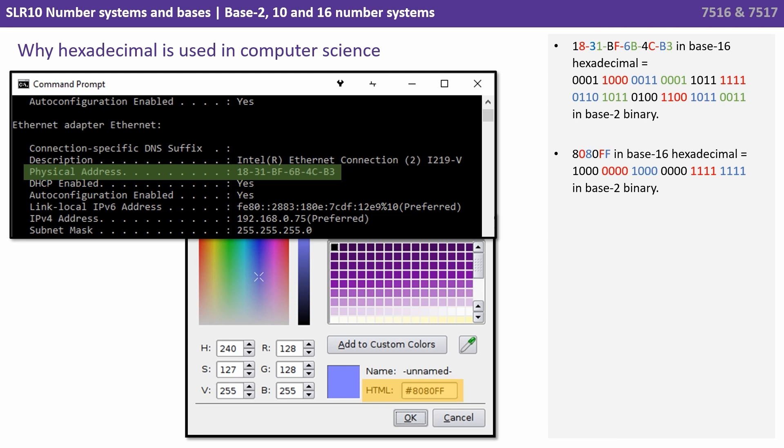So if we take our physical address 1831bf6b4cb3, now that's being represented in hexadecimal base 16, you can see how much longer that physical address would be if we had to represent it in its pure base 2 binary form. A similar way for the colour being represented in the bottom screenshot, it's only six digits, but we would have to use 24 binary digits if we represented it in base 2. So hexadecimal can be used as a convenient shorthand for representing much longer sequences of binary digits.